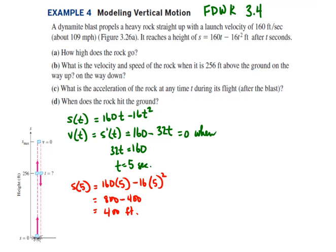Next, in part B, we want to find out what is the velocity and the speed of the rock when it is 256 feet above the ground, on the way up and also on the way down. So what we're going to do is take the position function and set it equal to 256 feet and solve for t. That will tell us what the time is, and then we can plug that time into the velocity function. So we have 16t squared minus 160t plus 256, it's a quadratic.